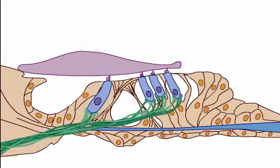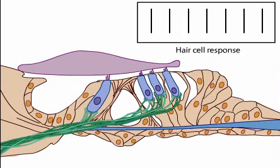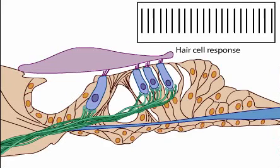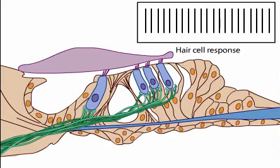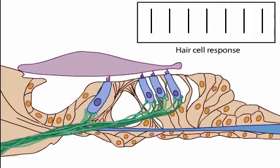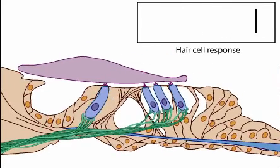The movements of fluid in the cochlea produce vibrations of the basilar membrane. These vibrations bend the stereocilia inserted into the tectorial membrane. Depending upon the direction of the bend, ion channels in the hair cells either open or close. Ultimately, a change in ion conductance in hair cells will either increase or decrease the firing rate of auditory nerve fibers.